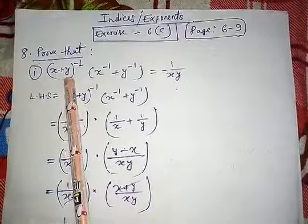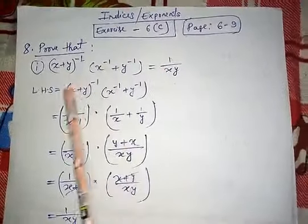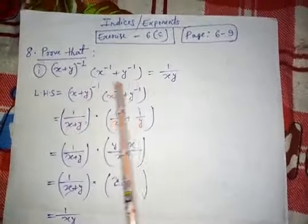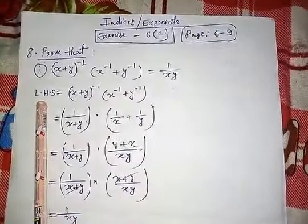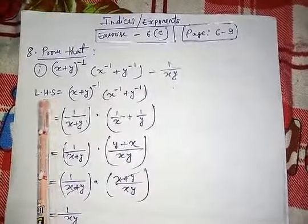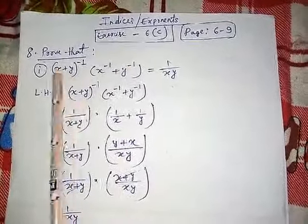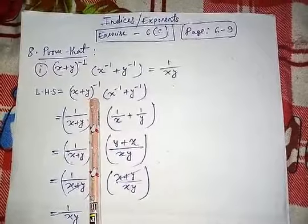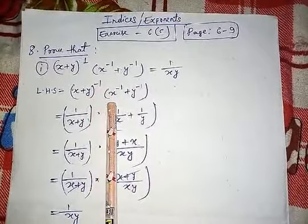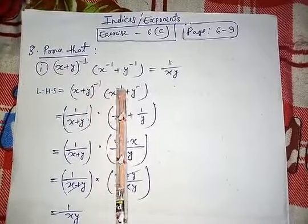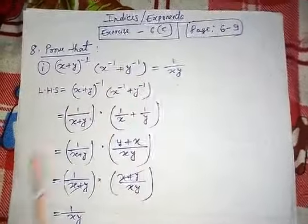Here you can see this is the left hand side and this is the right hand side. So we write the left hand side portion here: (x + y) to the power minus 1, times (x to the power minus 1 plus y to the power minus 1), bracket close.